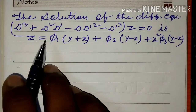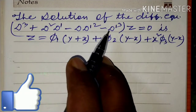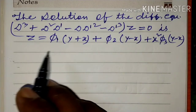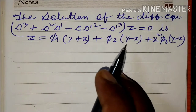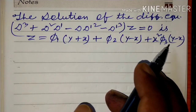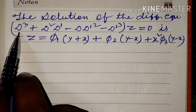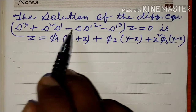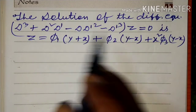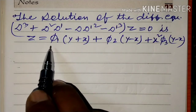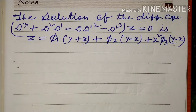The differential equation is Dq + D²D' - DD'² - D'³ z = 0, and the proposed solution is z = φ₁(y+x) + φ₂(y-x) + x²φ₂(y-x). हमें check करना है कि यह दिया हुआ solution इस differential equation का सही solution है या नहीं।